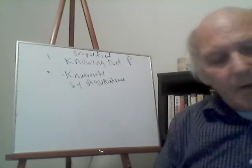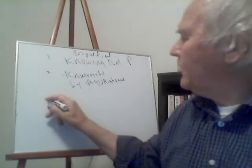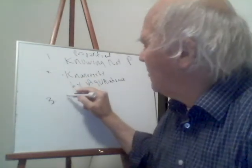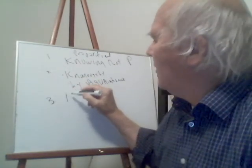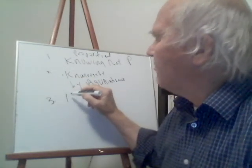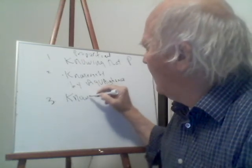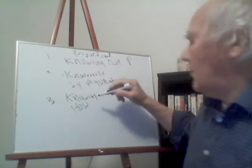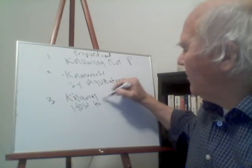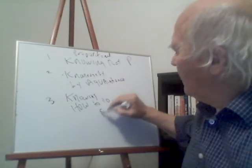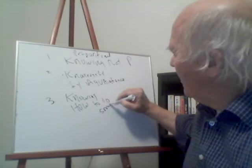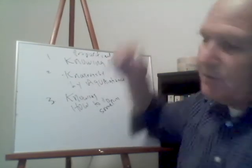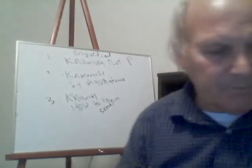The third type of knowledge was coined by Gilbert Ryle: knowing how — knowing how to do something, know-how knowledge. Gilbert Ryle came up with this one; Bertrand Russell came up with knowledge by acquaintance; and propositional knowledge goes all the way back to Plato and Aristotle.